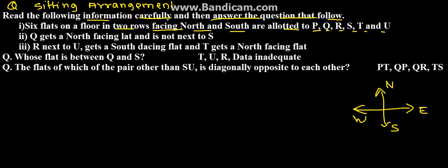So 6 flats are there: P, Q, R, S, T, and U. Two rows are there - this is the first row and this is the second row. The first row will have 3 flats and the second row will have 3 flats.